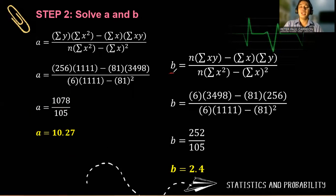For b, we follow the formula 6 times 3498 minus 81 times 256, all over 6 times 1111 minus 81 squared. So our b is 252 over 105, and b in simplified form is 2.4.